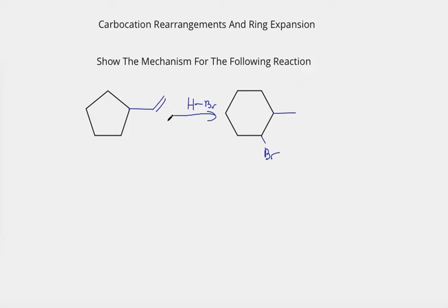Let's go ahead and start our mechanism. First, when we have a double bond and we have an HX where X is a halogen such as bromine, chlorine or iodine, the first step is that we take electrons from the double bond, bring them to the hydrogen, and then this bond breaks.